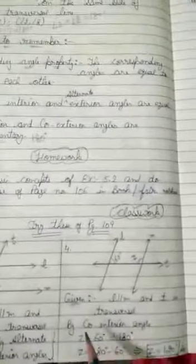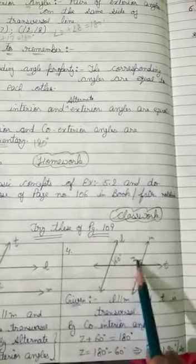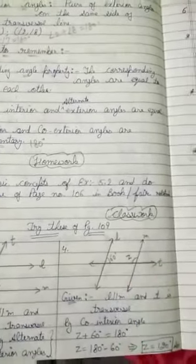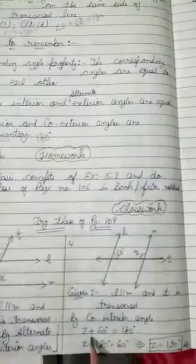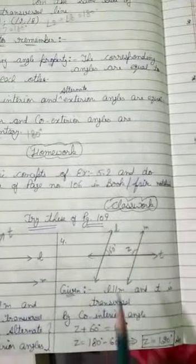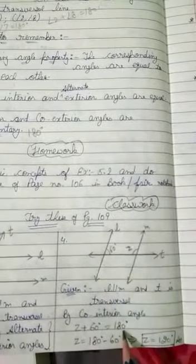So here by co-interior angle, because these two angles are lying inside. Co-interior angles are supplementary. We know in the points to remember that co-interior and co-exterior are supplementary. So that means their sum must be 180 degree. So Z plus 60 degree is equal to 180 degree.